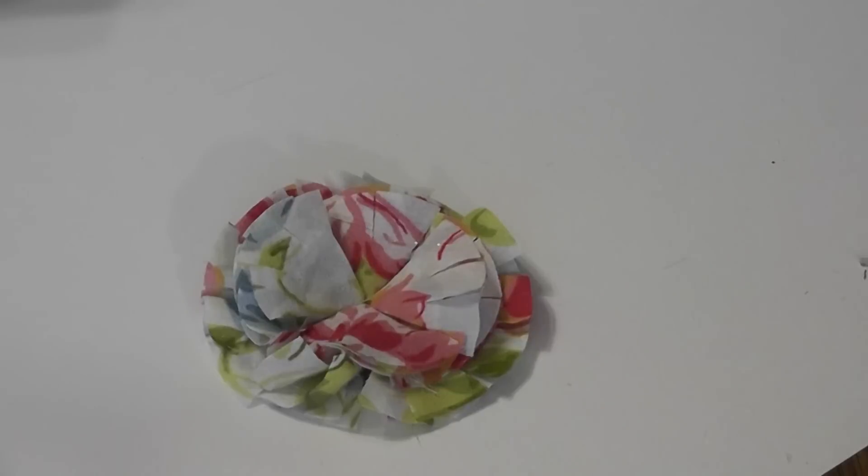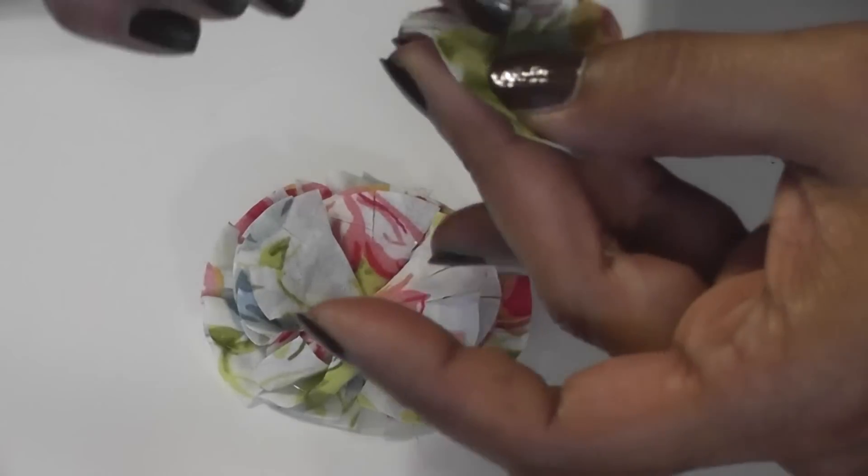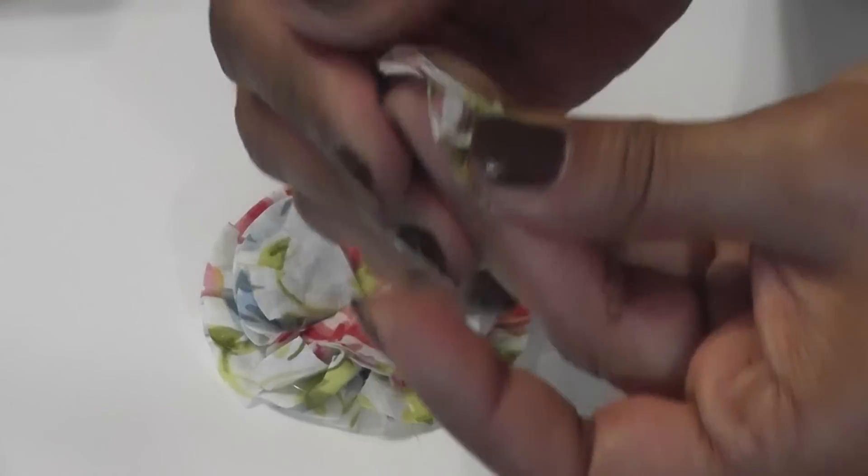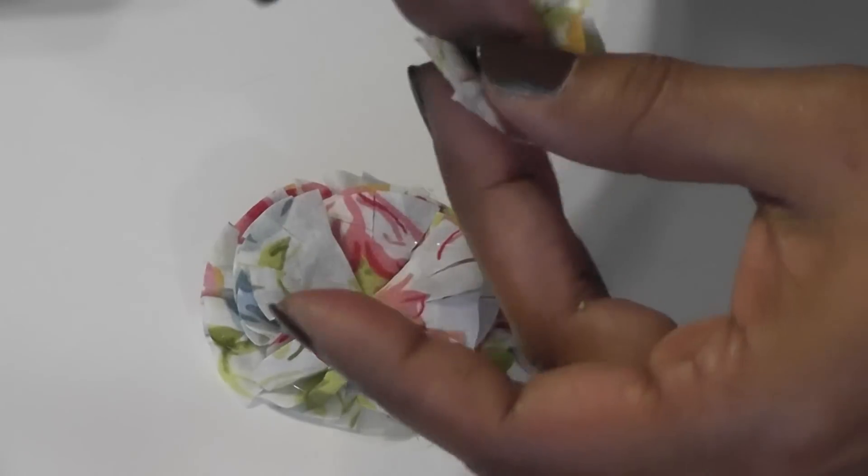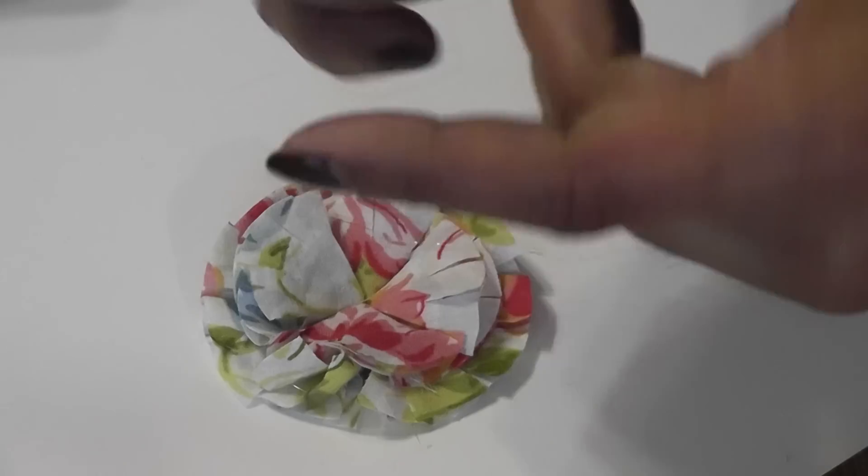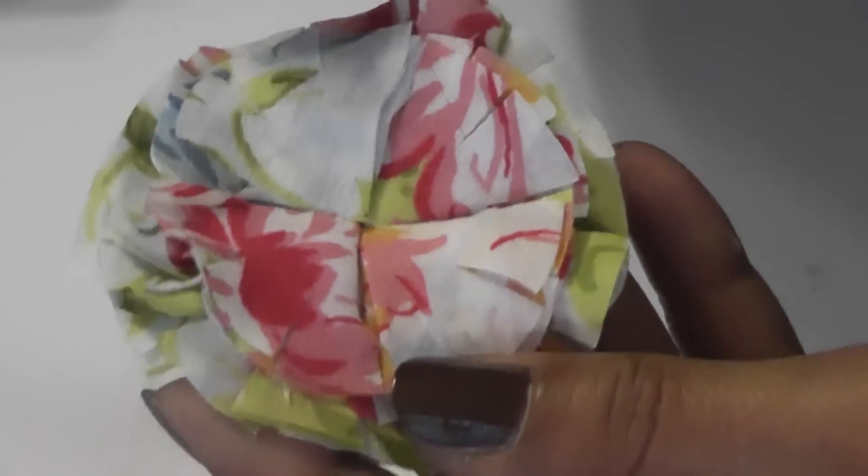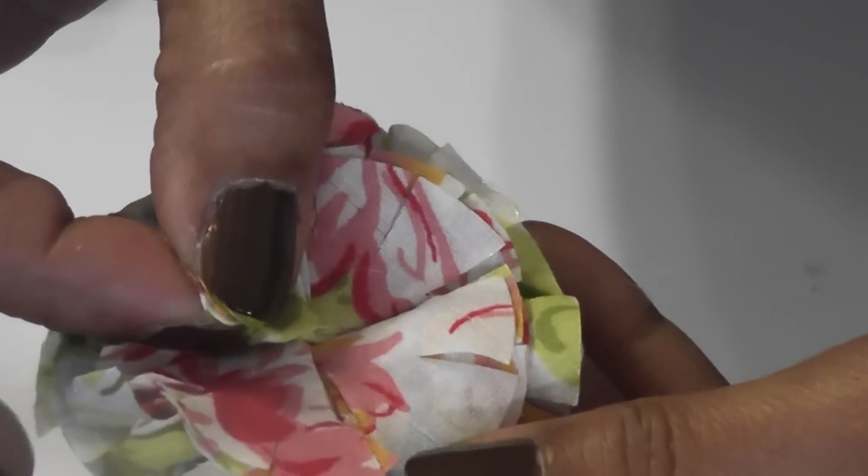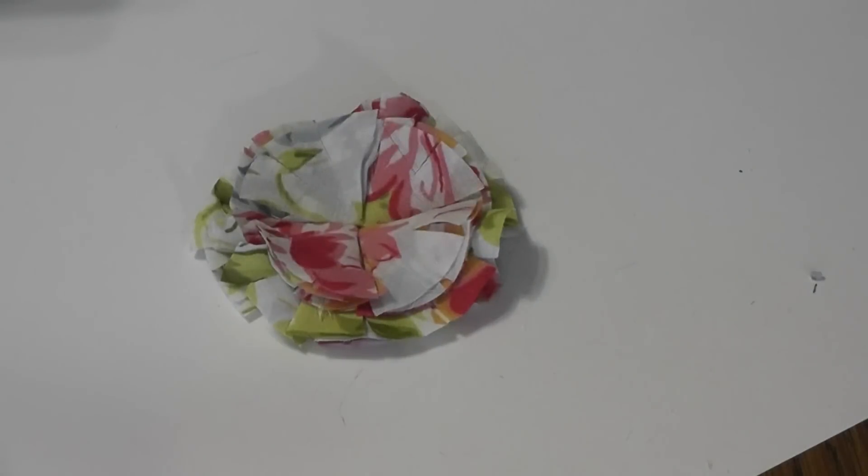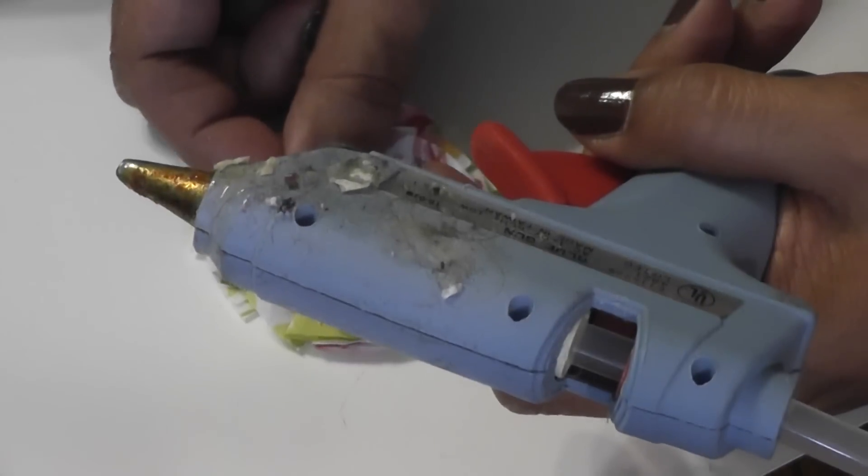And now I'm going to add the last layer, which is the smallest flower. Offset the fold. Fold it in half. Fold it in half again. Look for your line. See? It's like an X. You're going to line it up like so.